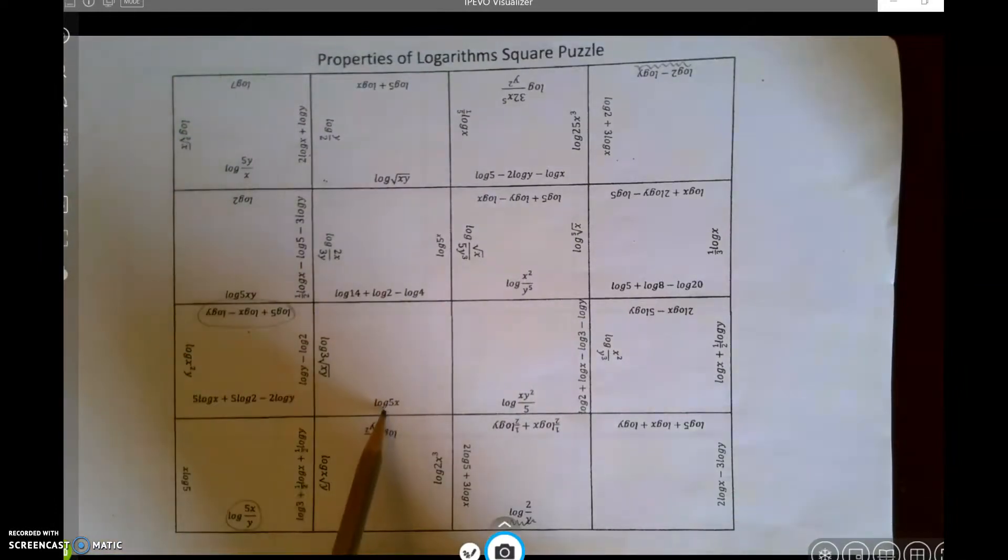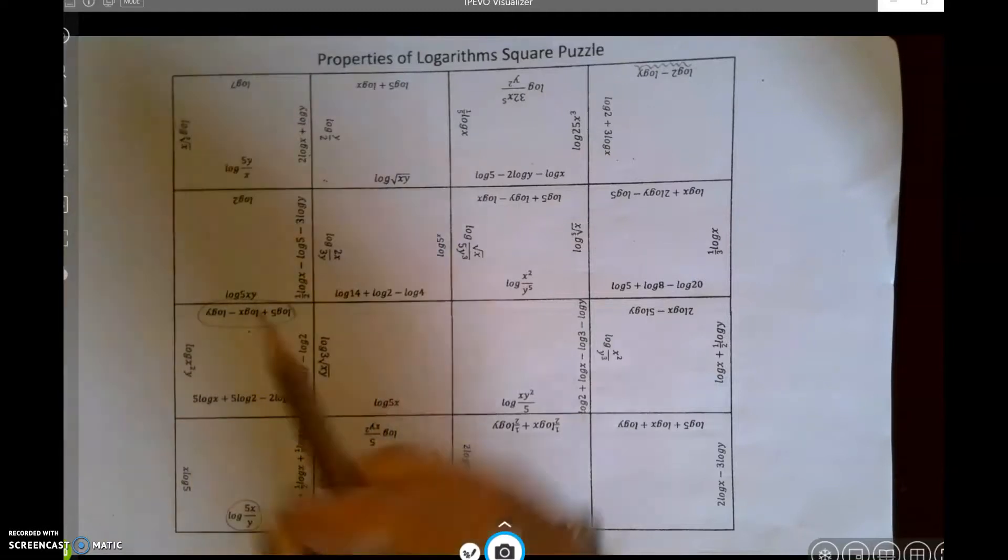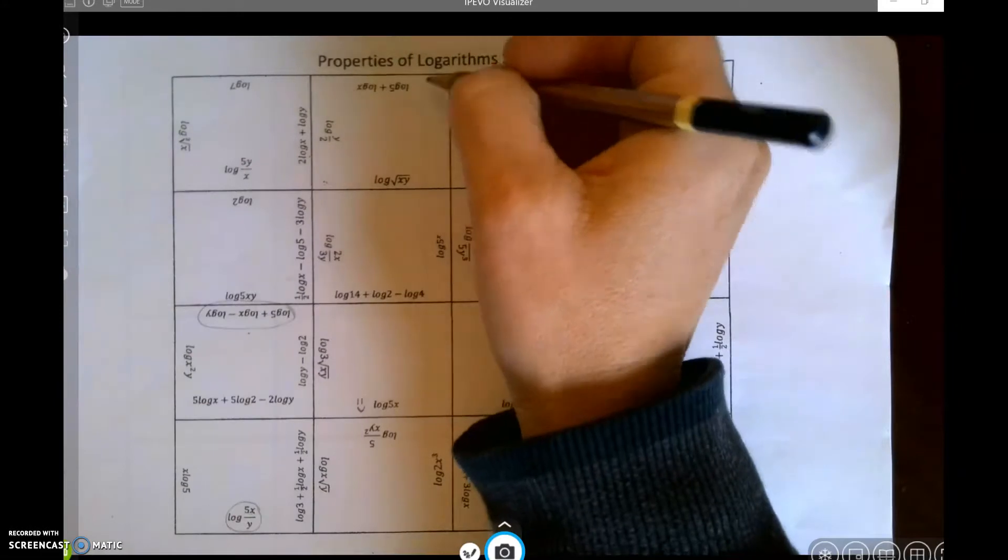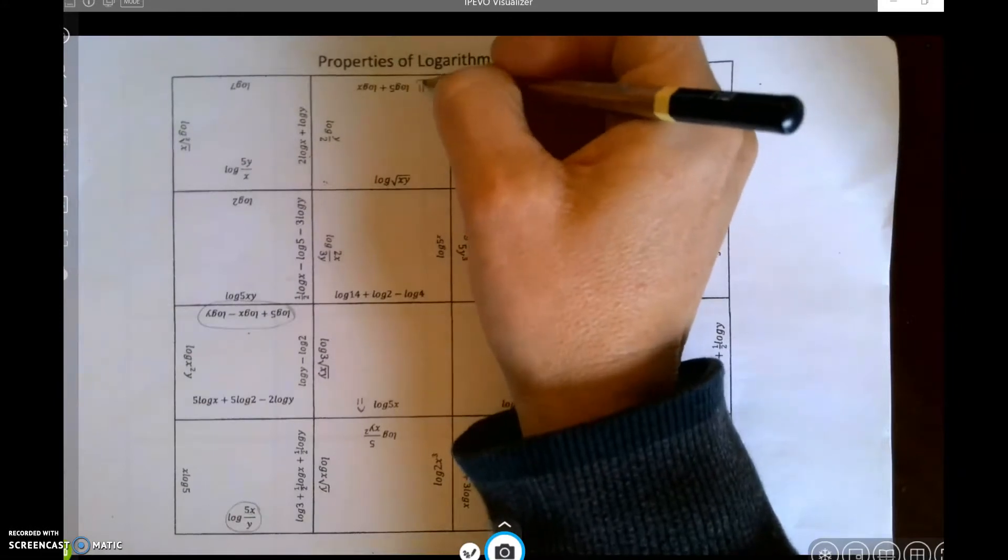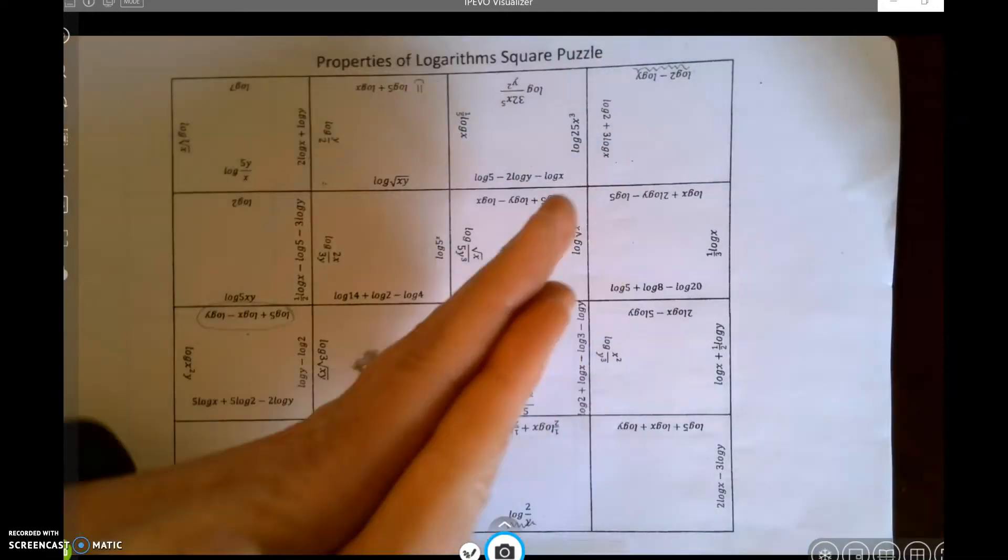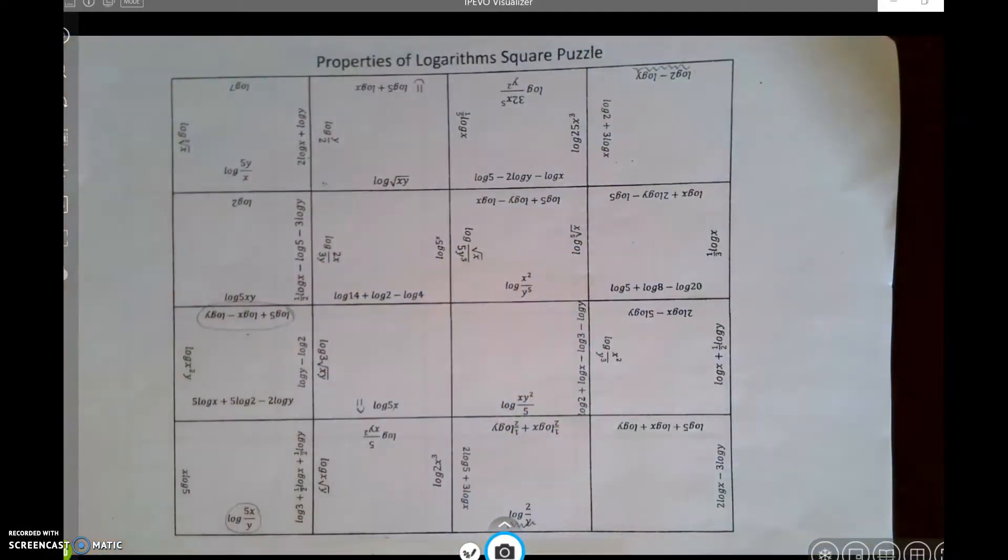Like I can see right here, log of 5x, this one right here, I'll put a little smiley face there, that's going to go with log of 5 plus log of x. I'm going to want these two to match up. Those puzzle pieces are going to fit together in a sense.